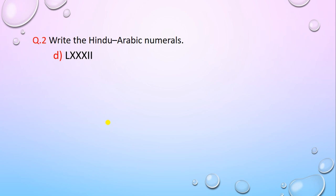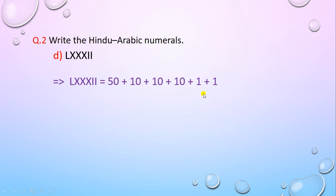Next example: LXXXII. L stands for 50, X stands for 10, plus 10, plus 10, and I stands for 1, plus 1. The total is 82.